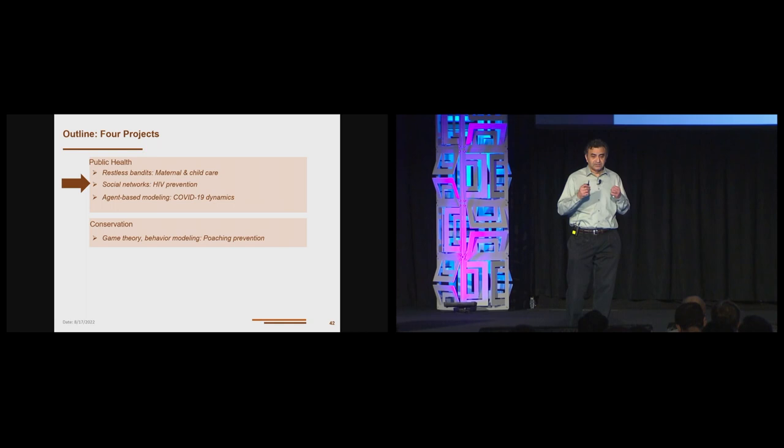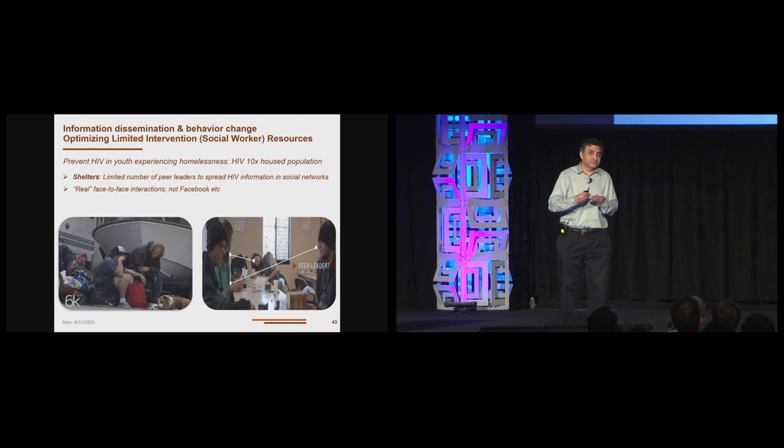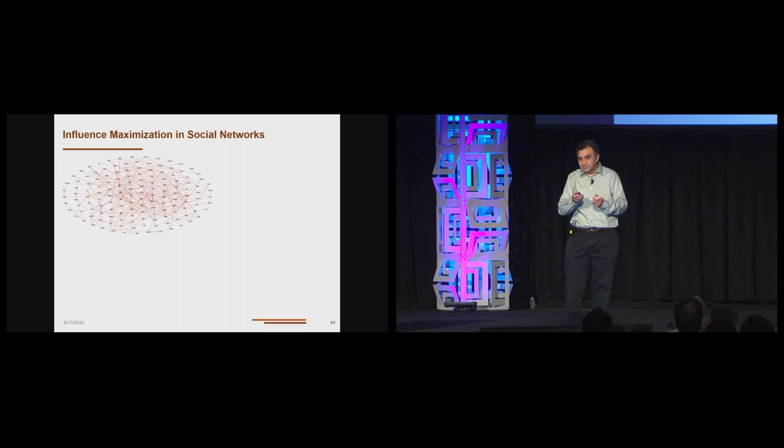So let me now switch over to a second project here, which is HIV prevention using social networks. This is work I did while I was in Los Angeles at USC. The problem that we worked on with our school of social work was preventing HIV amongst youth experiencing homelessness. There's 6,000 youth who sleep on the streets of Los Angeles every night. The rates of HIV in this population are 10 times the rate of the normal housed population. Homeless shelters, drop-in centers want to reduce this rate, but they can't go and talk to every single youth. So they invite peer leaders, educate them about HIV prevention, expect these youth to talk to their friends and their friends to talk to their friends.